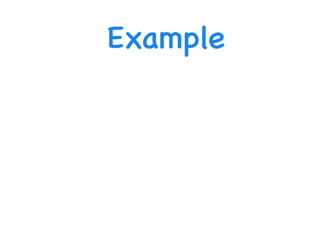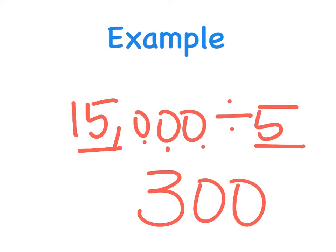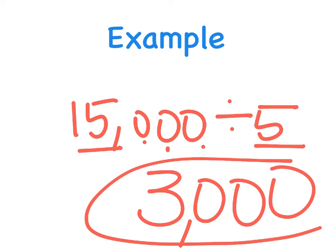Here's one last example. Let's say I had something like 15,000 divided by 5. I'm going to underline my nonzero digits and 15 divided by 5 is 3, and then I'm going to add on my 3 zeros for my final answer of 3,000.